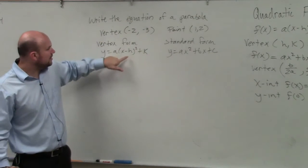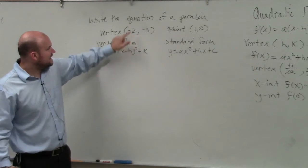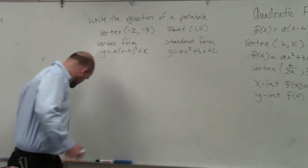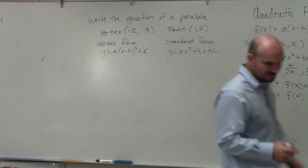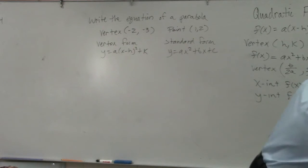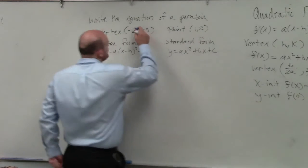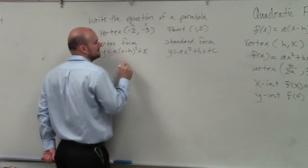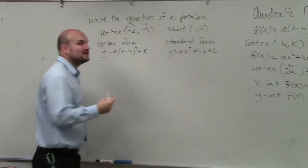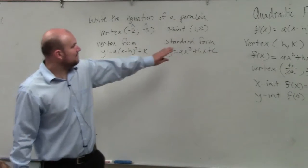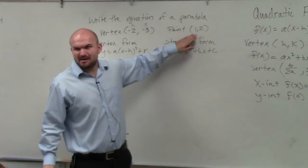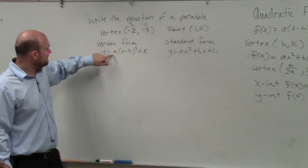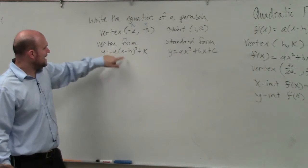Because we know h and k represent the vertex. So what I'm going to do is say that's h, that's k. Now I already know what h and k are. The problem is, what should the given point represent? So I have left y, x, and a.